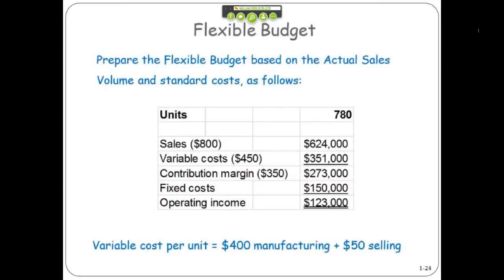The flexible budget for Schmidt would be based upon the actual sales of 780 and the budgeted price, variable costs, and therefore contribution margin. You can see here we chose to keep the fixed costs from the budget at the $150,000 level. We could have chosen the actual flexible if we thought it was appropriate.